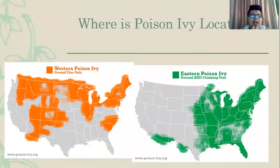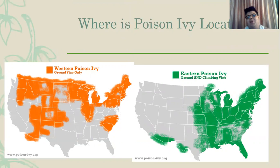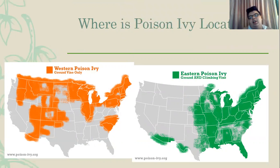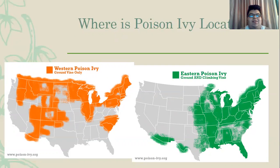Poison Ivy is located in most of the United States, but it is mostly specifically located in the Midwestern part and the Eastern part of the United States — the New England states and Midwestern states like New York, Ohio, or Michigan — one of those states out of 50.